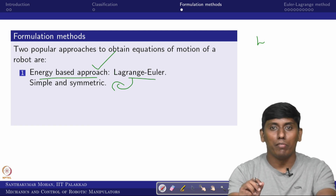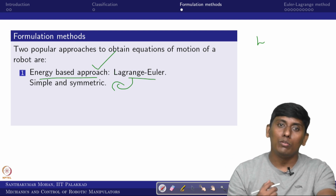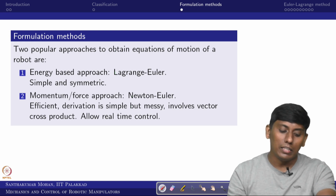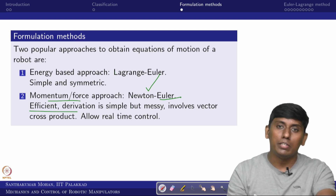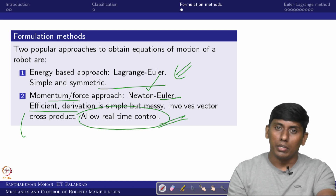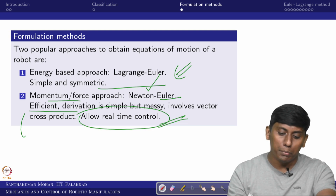The energy-based approach is the Lagrangian-Euler method, where Lagrange modifies the Euler equation. It is very simple and symmetric in nature and gives much better results for manipulators with a small number of degrees of freedom. As the degrees of freedom — active joints — increase, Lagrangian-Euler becomes less straightforward.